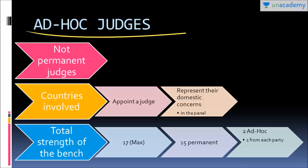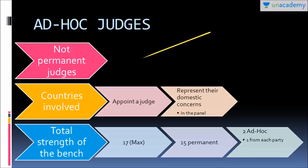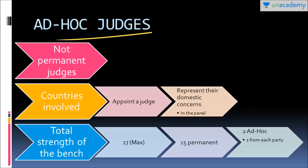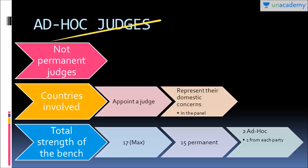Ad hoc judges are not permanent judges per se, but are appointed by the contesting parties so that their fears and apprehensions can be addressed. If there is a case between Pakistan and Bangladesh, and both countries have no representation in the ICJ, both can appoint one ad hoc judge each, making the maximum bench strength 17. However, this won't have much impact on judgment because if Pakistan's ad hoc judge favors Pakistan and Bangladesh's ad hoc judge favors Bangladesh, they effectively cancel each other out. Ad hoc judges are appointed simply to allay the apprehensions of the contesting parties.